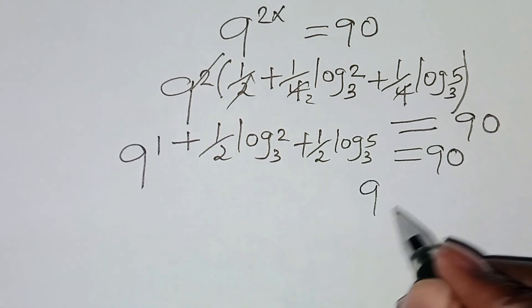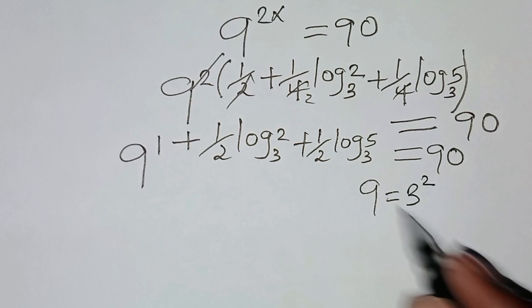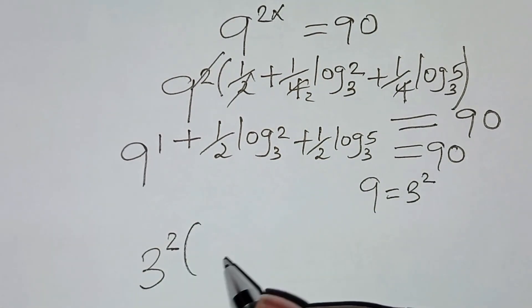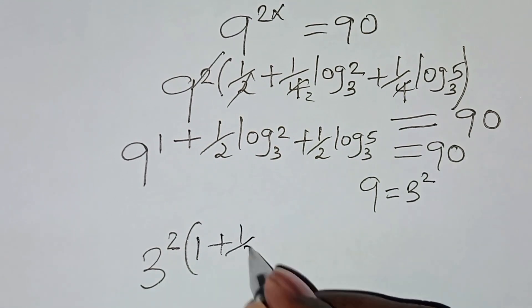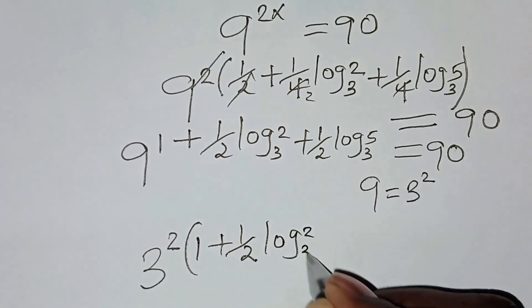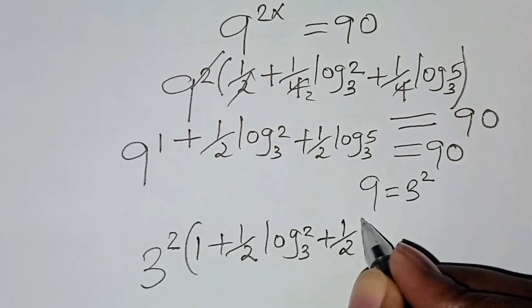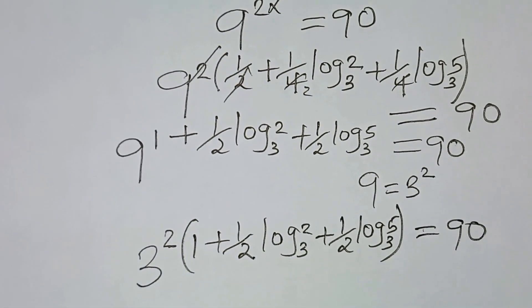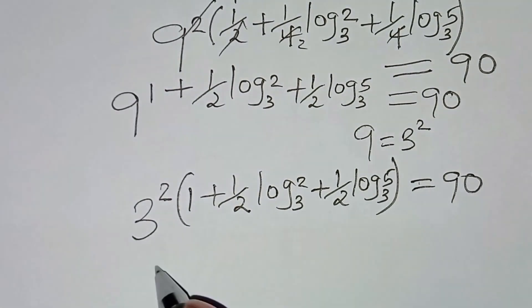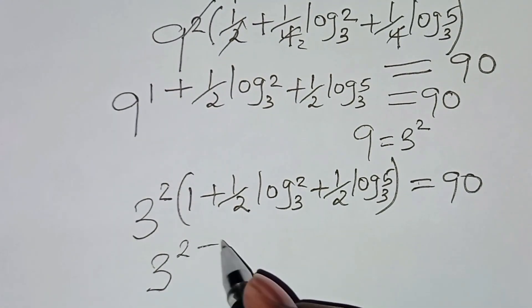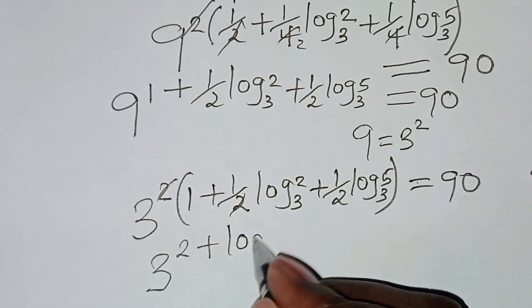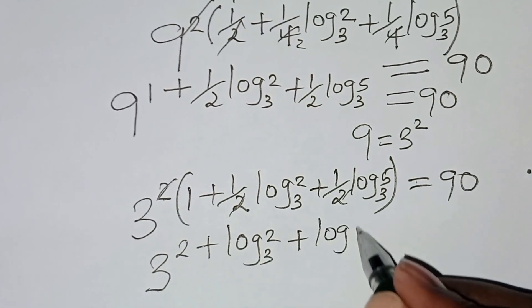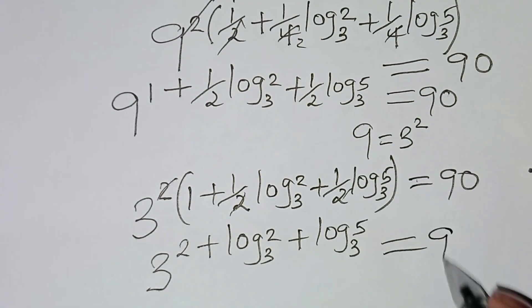We can express 9 as 3 to the power 2, so substituting this gives us 3² to the power of the bracket 1 plus one-half log₃2 plus one-half log₃5. Simplifying, this becomes 3 to the power 2 times 1, plus 3 to the power log₃2, plus 3 to the power log₃5, which should give us a value of 90.